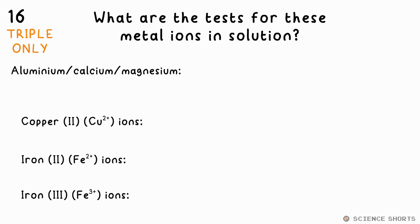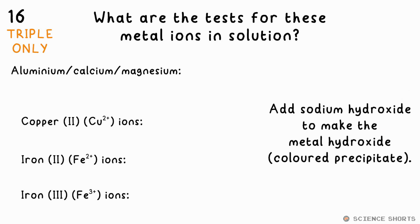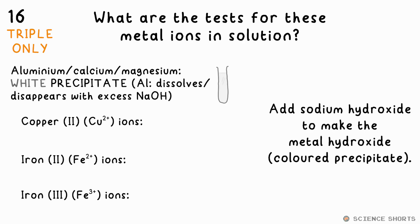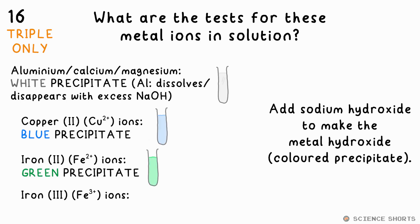Question 16. How do you test for these metal ions in solution? You add sodium hydroxide, which makes a metal hydroxide — that's a coloured precipitate. Aluminium, calcium, and magnesium all make white precipitates. Copper ions cause a blue precipitate to form. Iron(II) ions result in a green precipitate, while iron(III) ions make a brown precipitate.